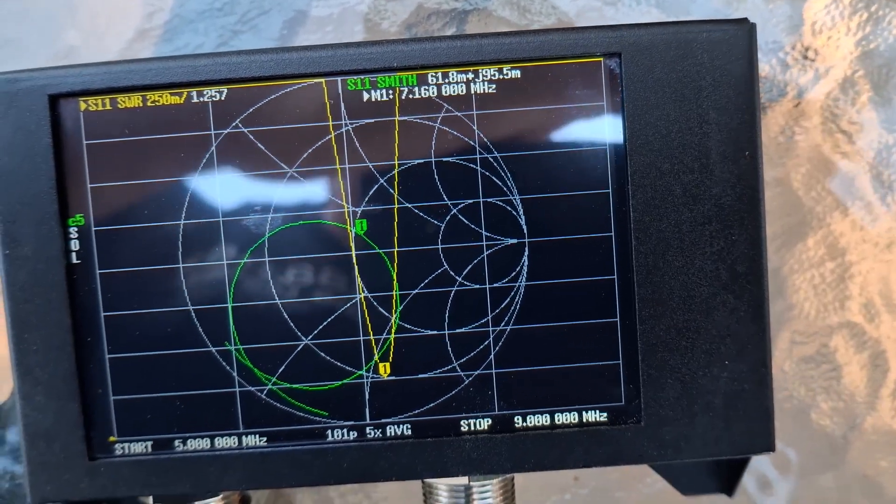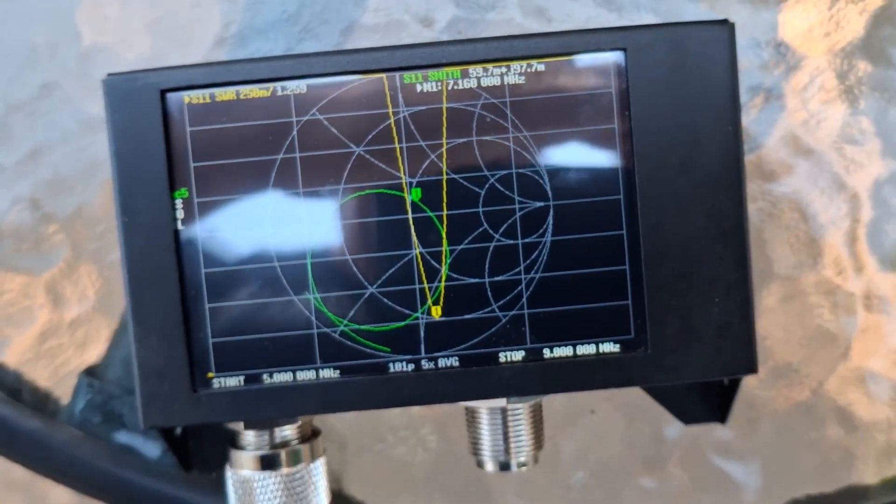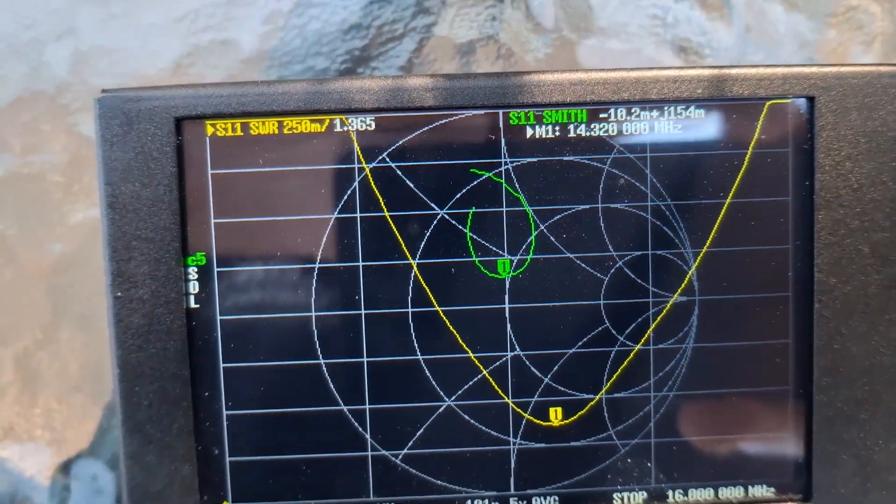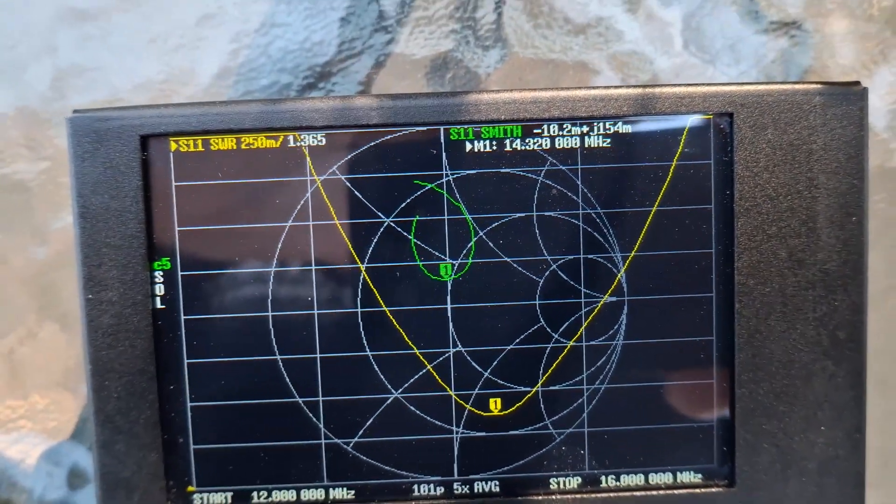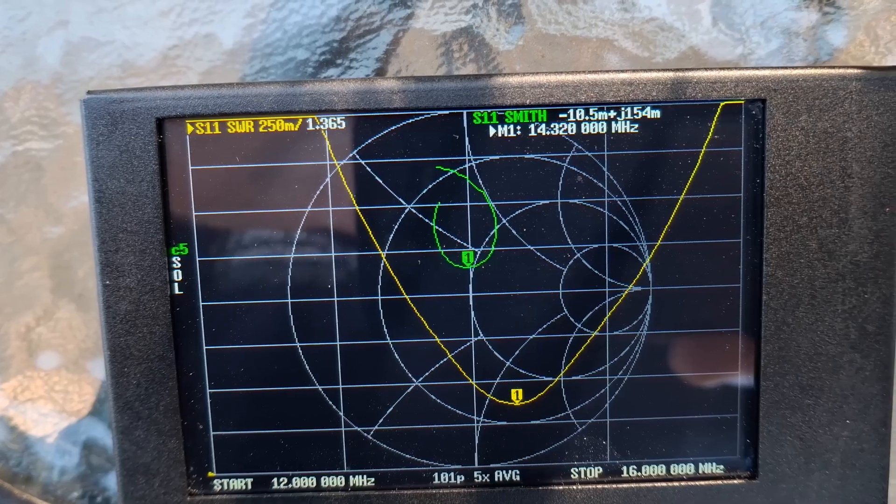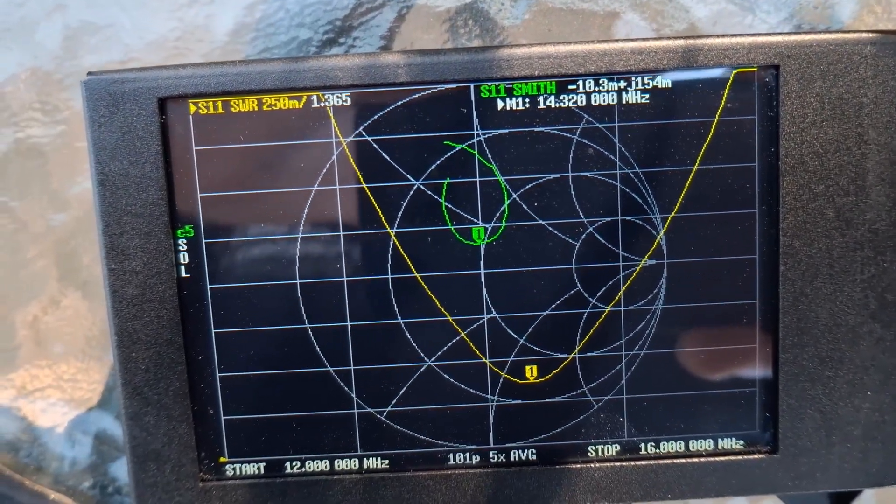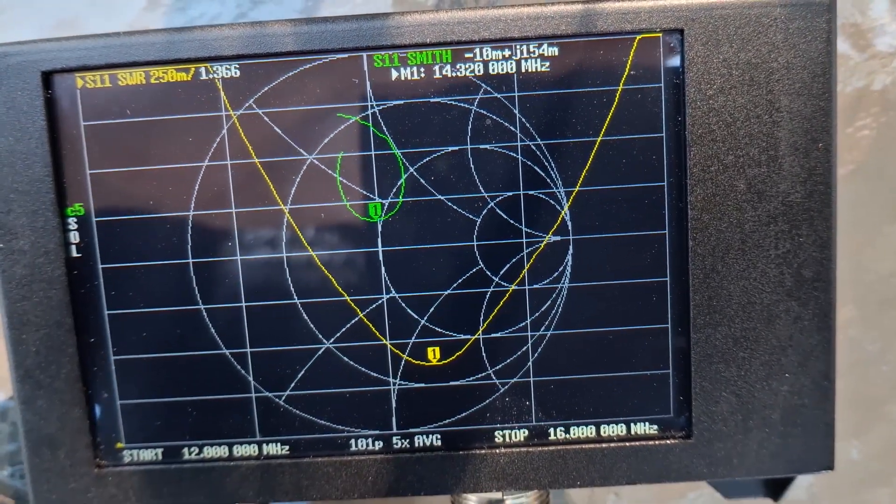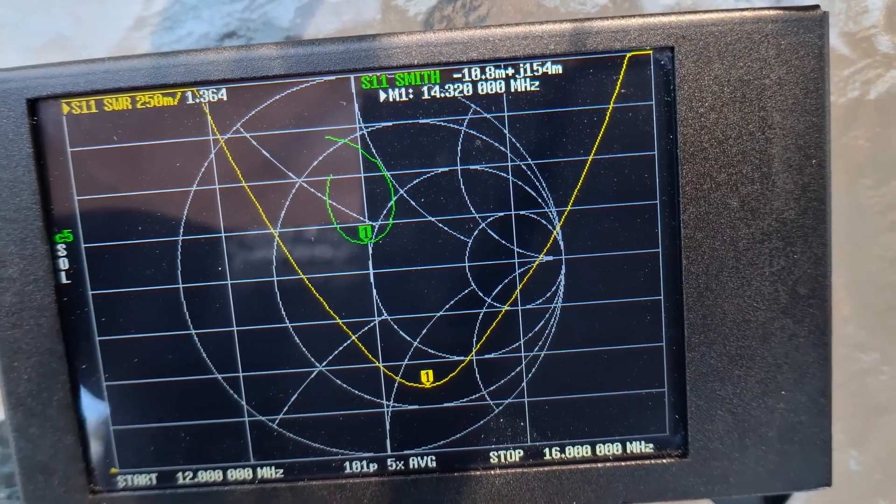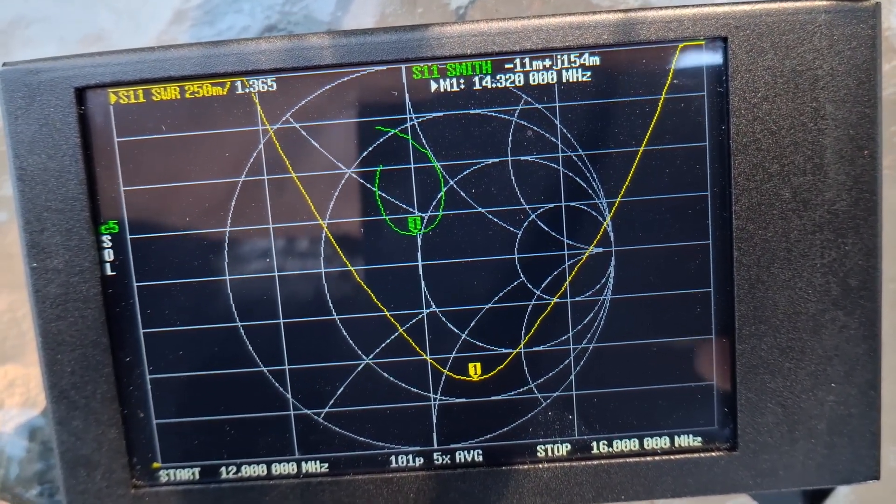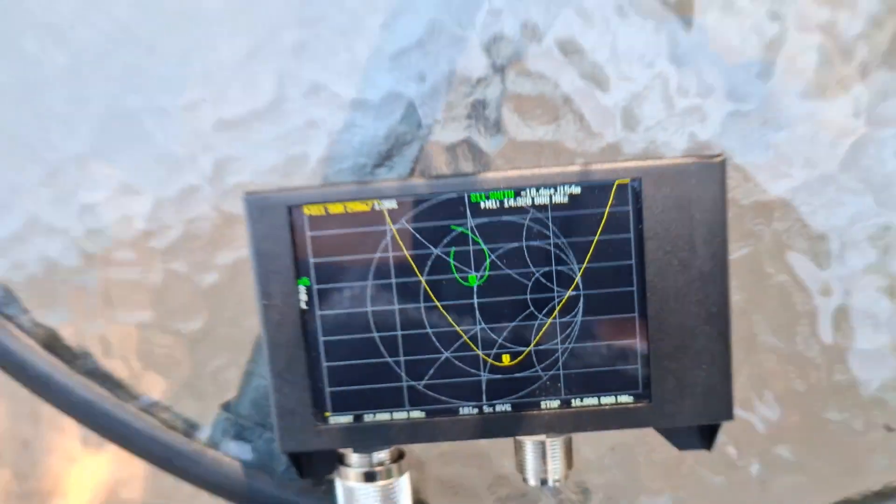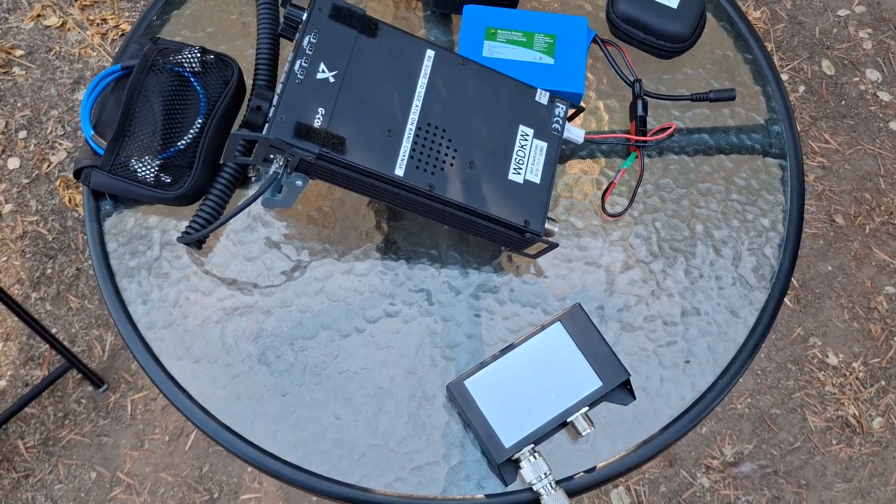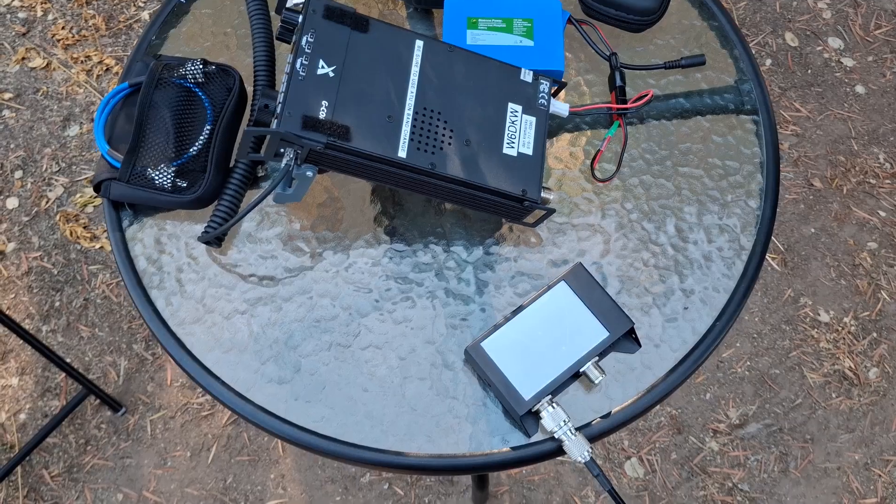Now I'm going to go put the shunt back in place and we'll take a look at that scan as well. Okay, I added the shunt back in so we're in 20 meter mode. And we're getting about a 1.365 on 20 meter, somewhere around 14.32, which is fine for me. I mean it's pretty much wide band. I cover the entire 20 meter band and the G90 radio itself pretty much takes care of the rest of the tuning. So let's go to the bench and we'll talk about the design.